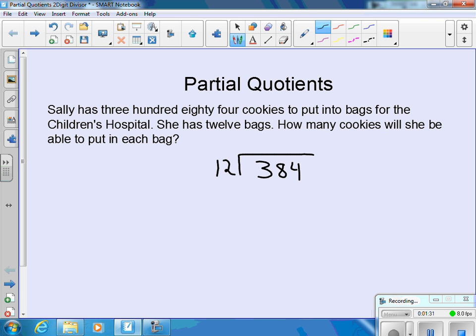When using partial quotients, you do not start by dividing. You start by creating a set of cluster problems or a think bubble. And this think bubble is based on whatever your divisor is. And you want to think of your divisor in groups.